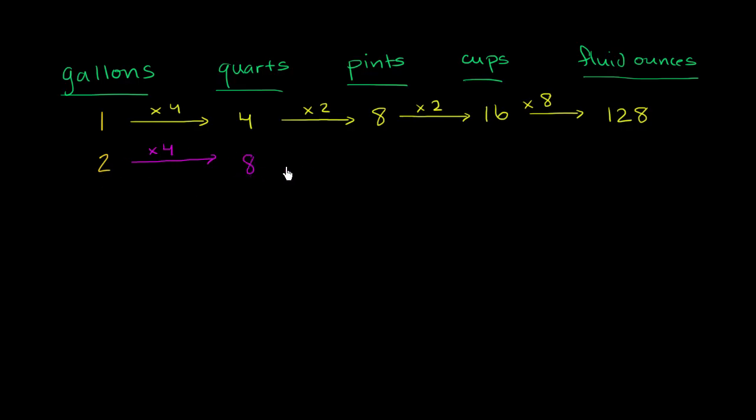Each quart is two pints, so if we want to go from quarts to pints, we multiply by two. This is going to be 16 pints. And then each pint is two cups, so if I have 16 pints, that's going to be 32 cups.